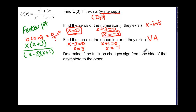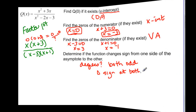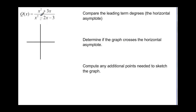We want to determine if the graph changes sides from one asymptote to the other. We have to go back and look at the degrees, and they're both odd. So that means we will change sides at both vertical asymptotes. Now let's compare the leading terms to find the horizontal asymptote.